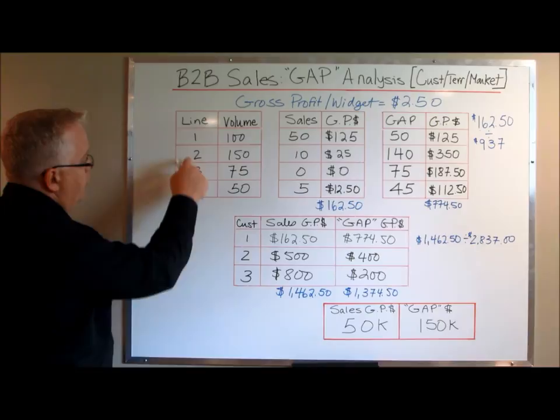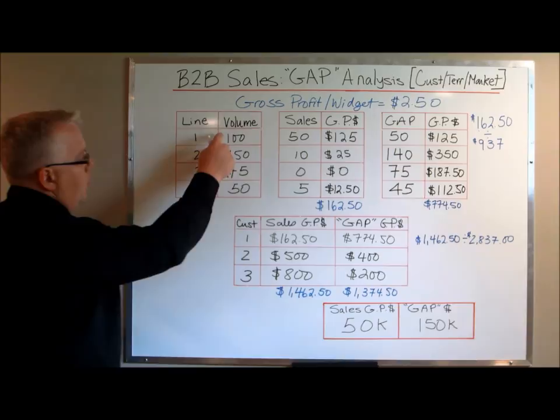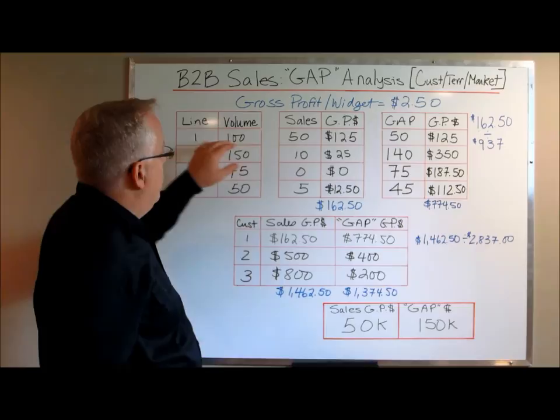Lines one, two, three, and four — these are the OEM's volumes in terms of their sales for each model type: 100, 150, 75, and 50.